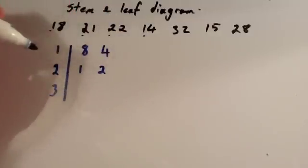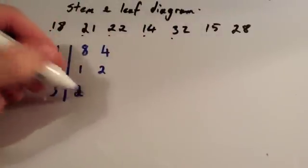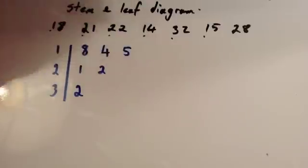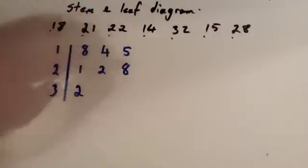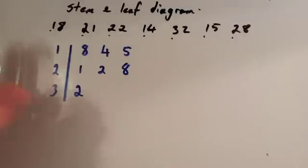So we're going to put a 4 in the tens row. We've got 32, so we're going to put a 2 in the 30s row. We've got 15, so we'll put a 5 in the tens row. And we've got 28, so we'll put an 8 in the 20s row.